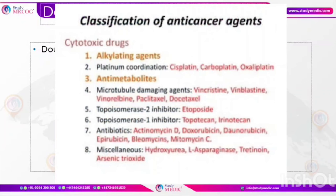For anti-cancer agents, they can ask which class a drug like methotrexate belongs to. Alkylating agents include cyclophosphamide, ifosfamide, and platinum coordinators include cisplatin, carboplatin, and oxaliplatin. Antimetabolite drugs include methotrexate. Microtubule-damaging agents are vincristine, vinblastine, paclitaxel, and docetaxel — vincristine and vinblastine inhibit microtubule aggregation. Topoisomerase 2 inhibitor is etoposide; topoisomerase 1 inhibitor is topotecan. Antibiotic chemotherapeutic drugs are actinomycin D, doxorubicin, daunorubicin, and mitomycin C.